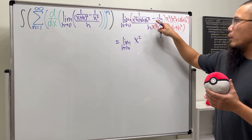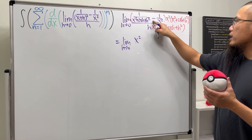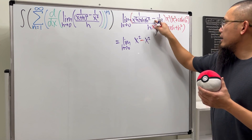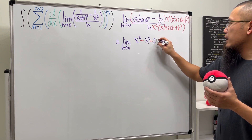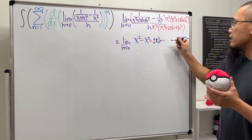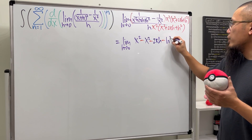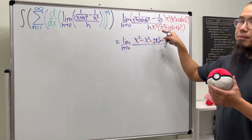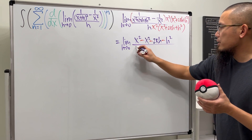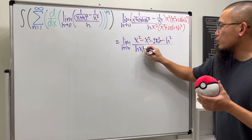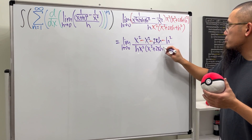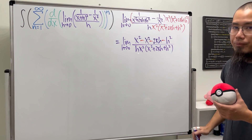This and that cancel, but we have to distribute the negative, so we get negative x squared, then negative 2xh, and then negative h squared — all over h times x squared times (x squared plus 2xh plus h squared).